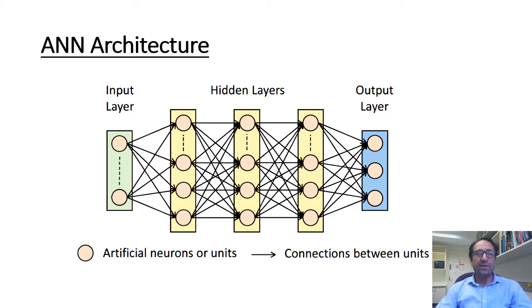In simplest terms, the network can be treated as a black box which operates on a set of inputs and generates some outputs. I shall highlight some of the interesting aspects of this architecture in more detail in the next slide.